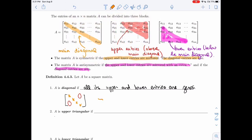So the diagonal entries may or may not be 0s.